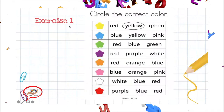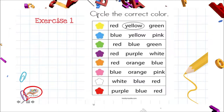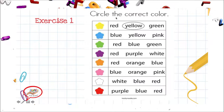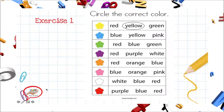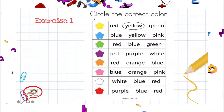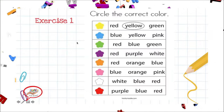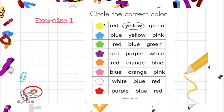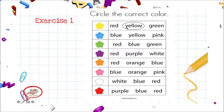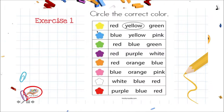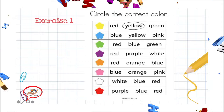Exercise one. Let's read instructions. Ejercicio número uno. Leamos las instrucciones. Circle the correct color. Circulemos el color correcto. First, they gave us an example. We have the color yellow, so they circled the word yellow. Tenemos el color amarillo, entonces tenemos que circular la palabra que diga el color yellow.